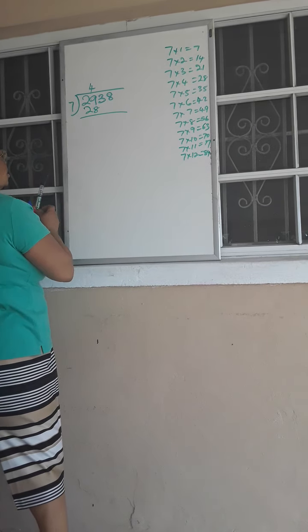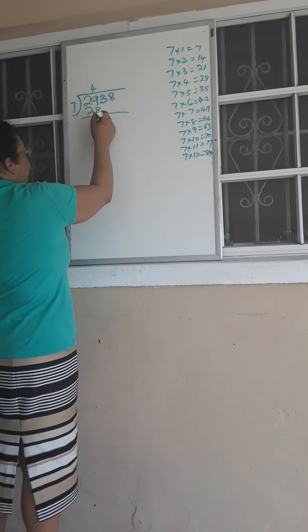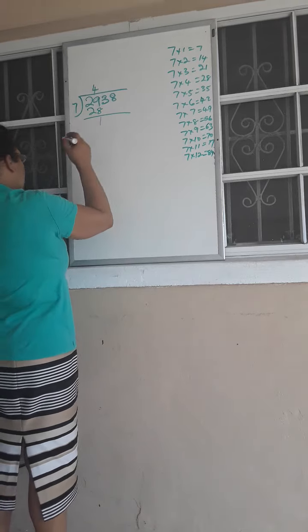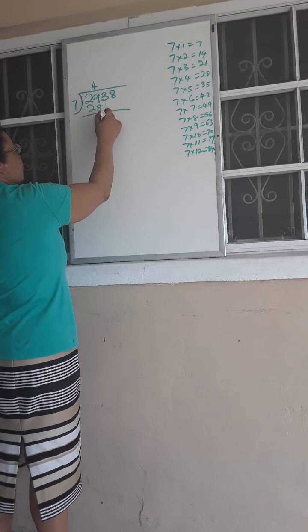Now I'm going to do the subtraction. 9 take away 8, I'm left with 1. 2 take away 2, nothing is left. Now I'm going to bring down this 3.